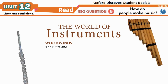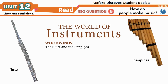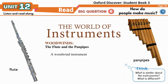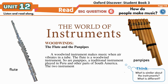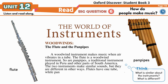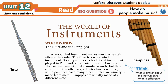Woodwinds: the flute and the panpipes. A woodwind instrument makes music when air vibrates in a tube. The flute is a woodwind instrument, and so are the panpipes — a traditional instrument played in Peru and other parts of South America. The two instruments make similar sounds, but they are different in other ways: flutes have one tube while panpipes have many tubes. Flutes are usually made of metal; panpipes are usually made of a different material such as bamboo or cane.